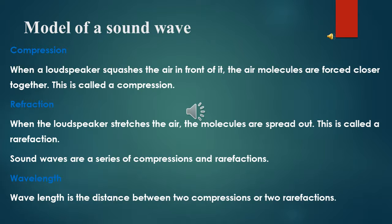Now it's time to move forward to the next objective: model of a sound wave. In this topic we will learn the following things. First, compression — when a loudspeaker squashes the air in front of it, the air molecules are forced closer together; this is called a compression. Second, rarefaction — when the loudspeaker stretches the air, the molecules are spread out; this is called a rarefaction. Sound waves are a series of compressions and rarefactions. Third, wavelength — wavelength is the distance between two compressions or two rarefactions.